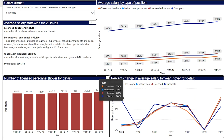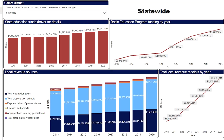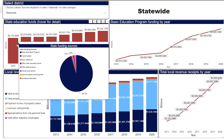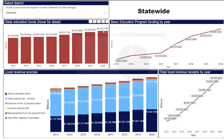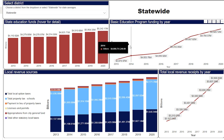Finally, the third tab of the dashboard displays state and local revenues for each district. In the top left box, a bar chart shows the amount of state funding the district received each year from 2013 through 2020. Hover over each bar to see a pie chart with the percentage breakdown of state funding sources, including the Basic Education Program, or BEP. The BEP is the funding formula for Tennessee's K-12 public schools. In the box at the top right, the district's annual dollar amount of BEP funding is plotted on a line graph to highlight any changes in funding.